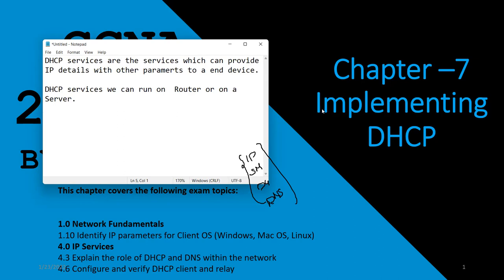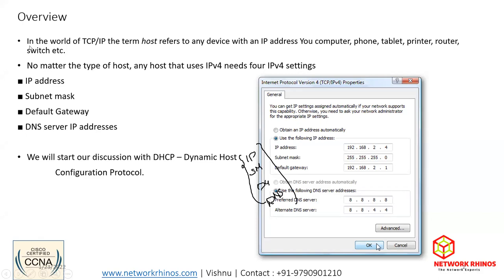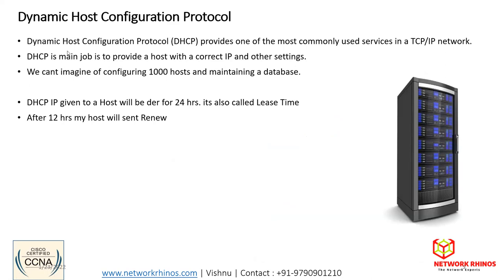In the world of TCP/IP, the term 'host' refers to any device with an IP address — your computer, phone, tablet, printer, router, switch, etc. Using DHCP, you're going to provide IP addresses to hosts. No matter what type of host, they need an IPv4 address. In CCNA we focus on IPv4. DHCP — Dynamic Host Configuration Protocol — provides one of the most commonly used services in a TCP/IP network, giving IP addresses to any number of devices.